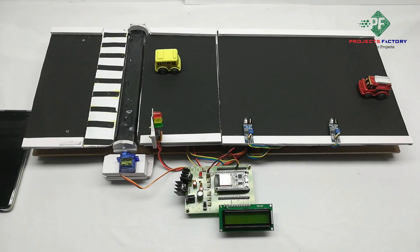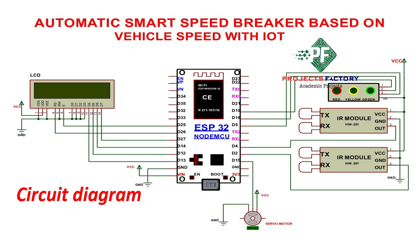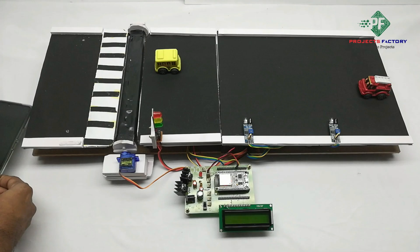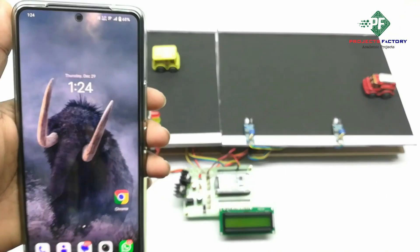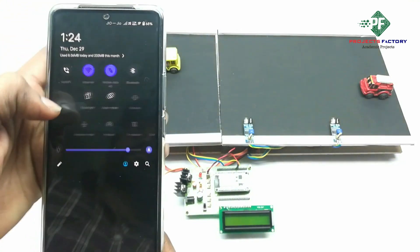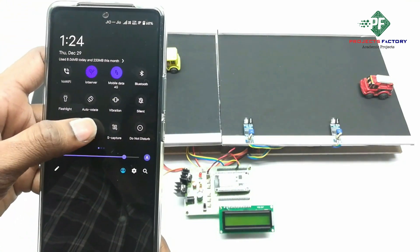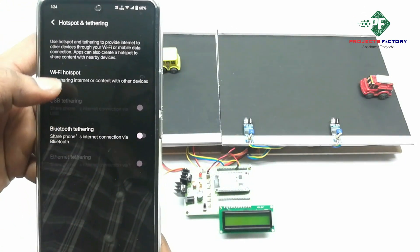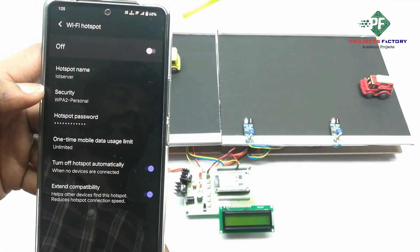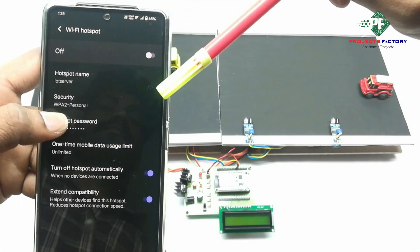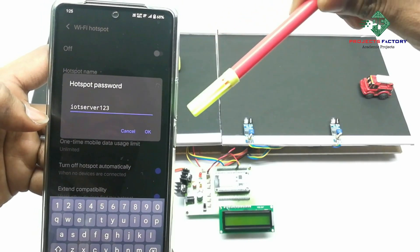Before starting this project, we need to create a hotspot on our mobile with username 'IOT server' and password 'IOT server123'. Now open the hotspot settings. We can see the username 'IOT server' and password 'IOT server123' configured.